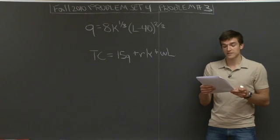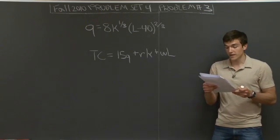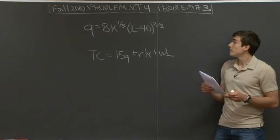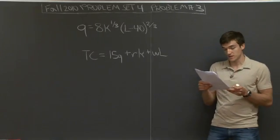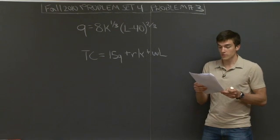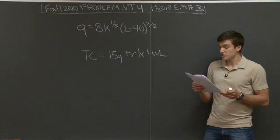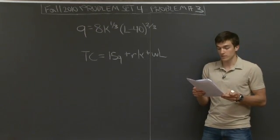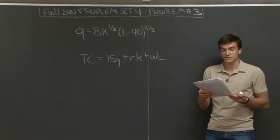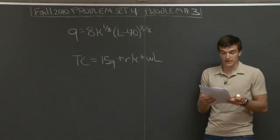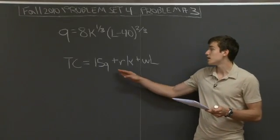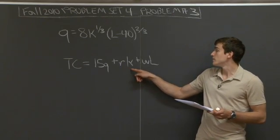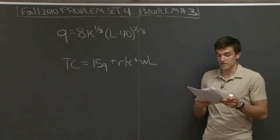Problem Number 3 says: suppose the process of producing corn on a farm is described by the function q equals 8k to the one-third times quantity l minus 40 raised to the two-thirds, where q is the number of units of corn produced, k is the number of machine hours used, and l is the number of person hours of labor. In addition to capital and labor, the farmer needs to pay a $15 transportation fee to deliver corn to downtown. So total cost equals 15 times quantity produced, plus the rental costs of capital, plus the wage rate times the quantity of labor.